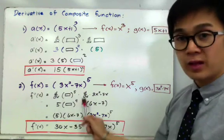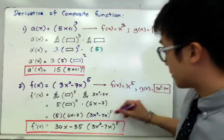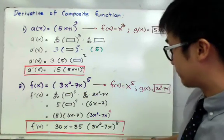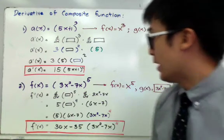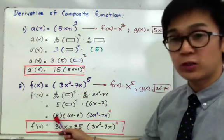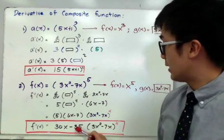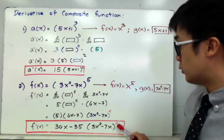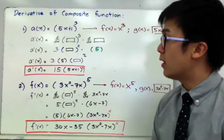Putting it all together, we have 5 times (6x−7) multiplied by (3x²−7x)⁴. Distributing 5 into (6x−7) gives 30x−35, so the final derivative is (30x−35)(3x²−7x)⁴. This is how we use the chain rule in finding the derivative of composite functions.